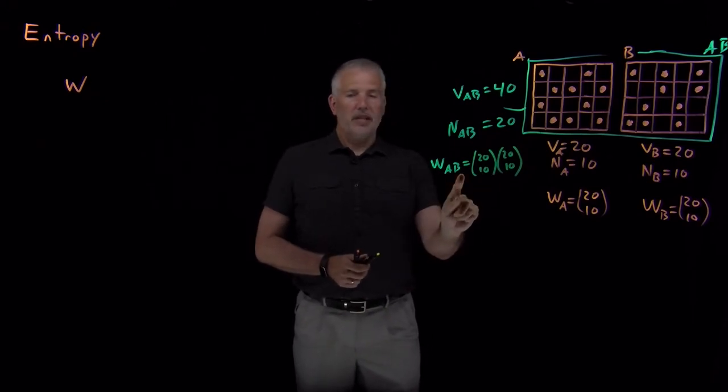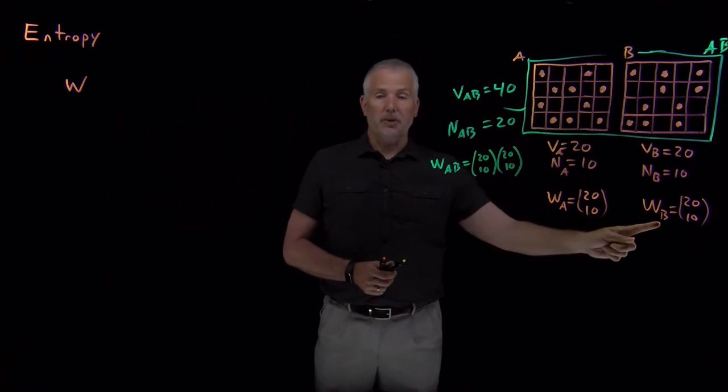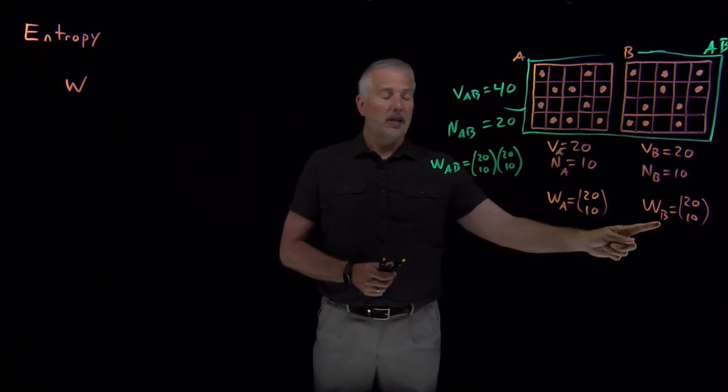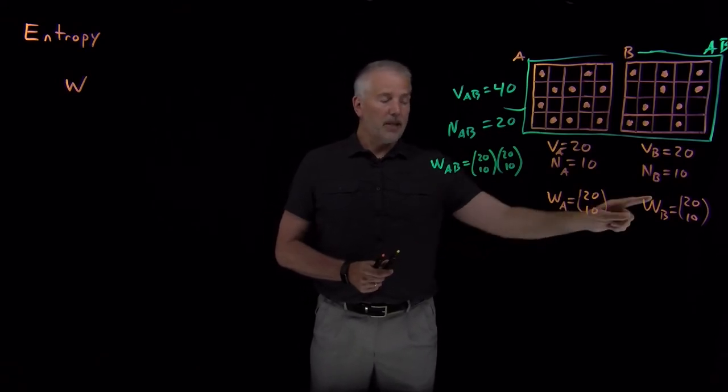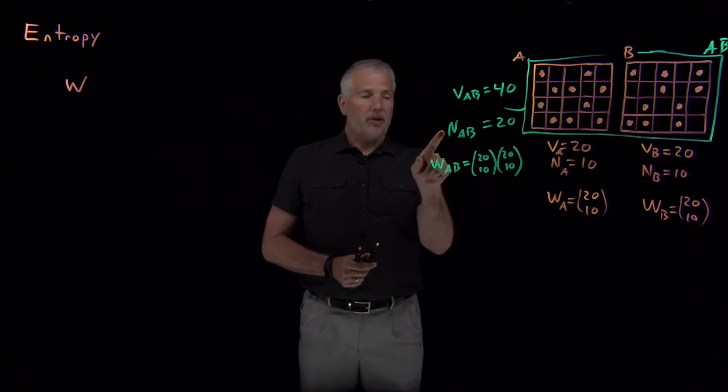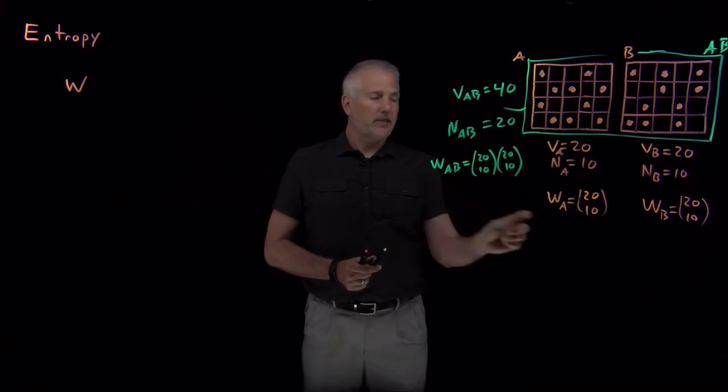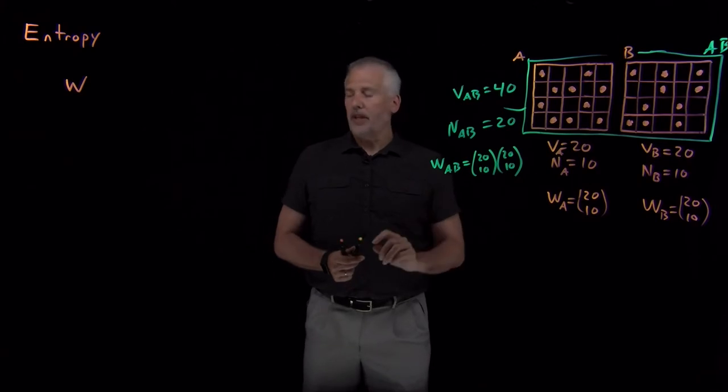The multiplicity for the combined system, it turns out, is not the sum of the two multiplicities of the individual system. It's actually the product of the multiplicities for the individual system. It's also not the same as either multiplicity. So volume and number of molecules are extensive properties. Multiplicity is not an extensive property.